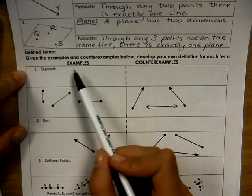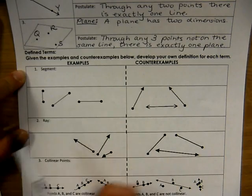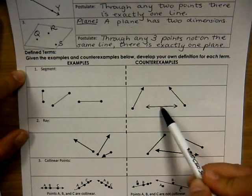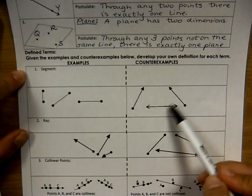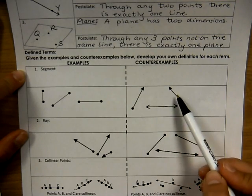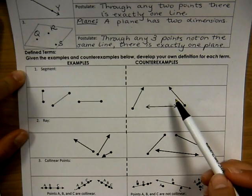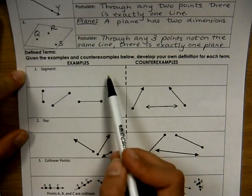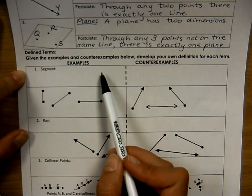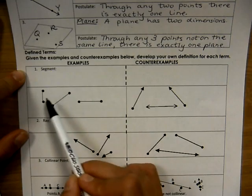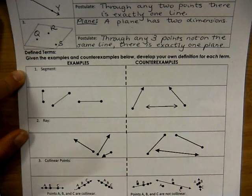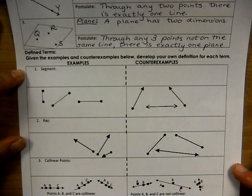So example one is a segment. All three of these are examples of segments. These three figures are counter-examples, or examples of figures that are not segments. What I'd like you to do now is on the left-hand side, write your own definition of what you think a segment is based on the examples and counter-examples. I don't need you to look up any definitions. I just want you to look at these and try to construct your own definitions. We will discuss this in class tomorrow.